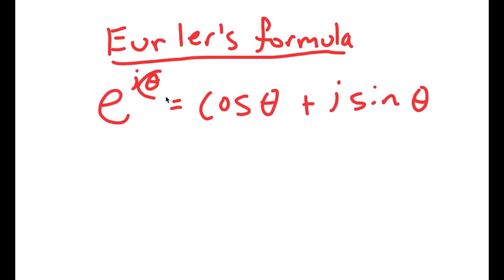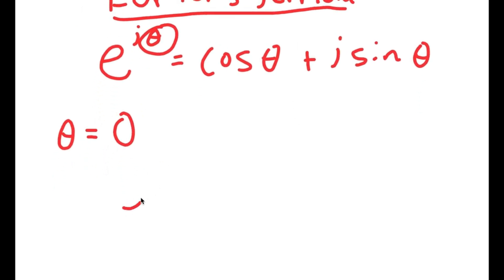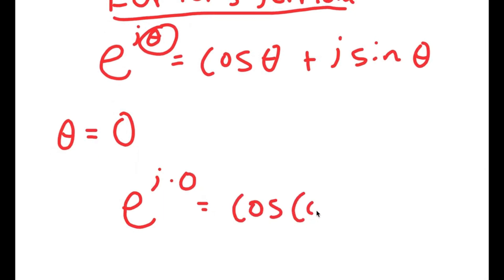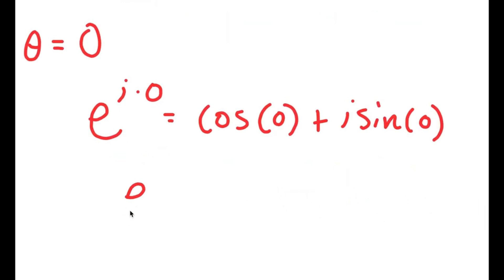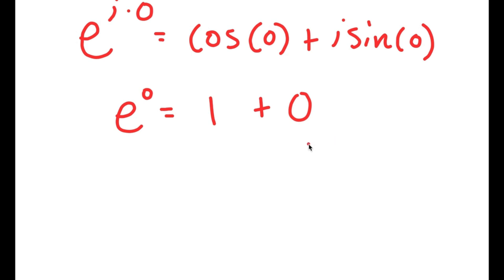So let's say that theta here is equal to 0. If theta equals 0, then I get e to the power of i times 0 is equal to cos of 0 plus i times sine of 0. So then I get e to the power of 0 is equal to 1, cos of 0 is 1, plus sine of 0 is 0, and 0 times i is 0. So 1 plus 0. And e to the power of 0 is 1, so I get 1 is equal to 1 plus 0.